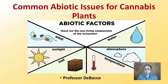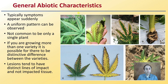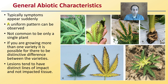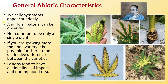It's not always a disease that causes a reduction in yield. Typically, symptoms will appear suddenly if it is an abiotic issue. A uniform pattern can also typically be observed, and it's not common to be only on a single plant — you'll see many plants have this issue.